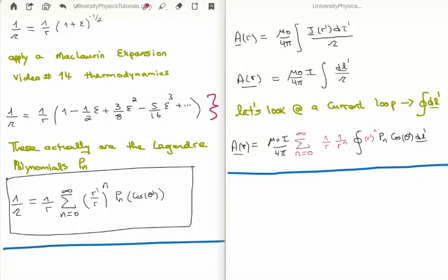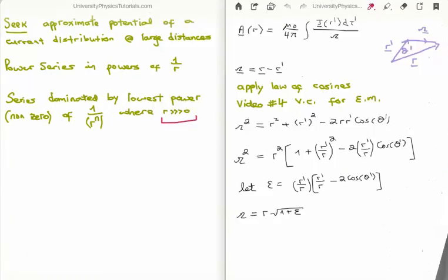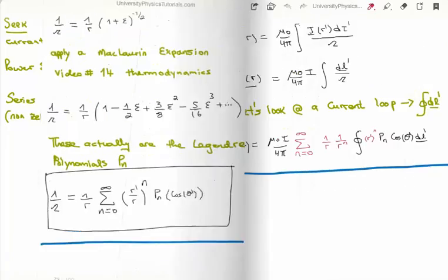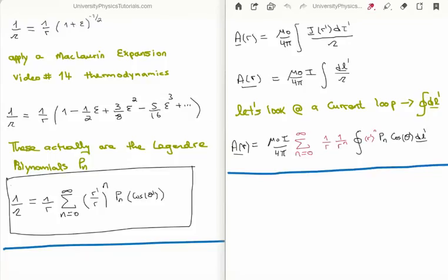We get a power series: epsilon to the 0, to the 1, squared, cubed, and so on. When we plug back in for epsilon — substituting r', r, and theta, where theta is the angle between r and r' — these turn out to be the Legendre polynomials, which are solutions to the Legendre equation and appear throughout physics. So we know that 1 over the magnitude of the separation vector can be rewritten in terms of the Legendre polynomials.